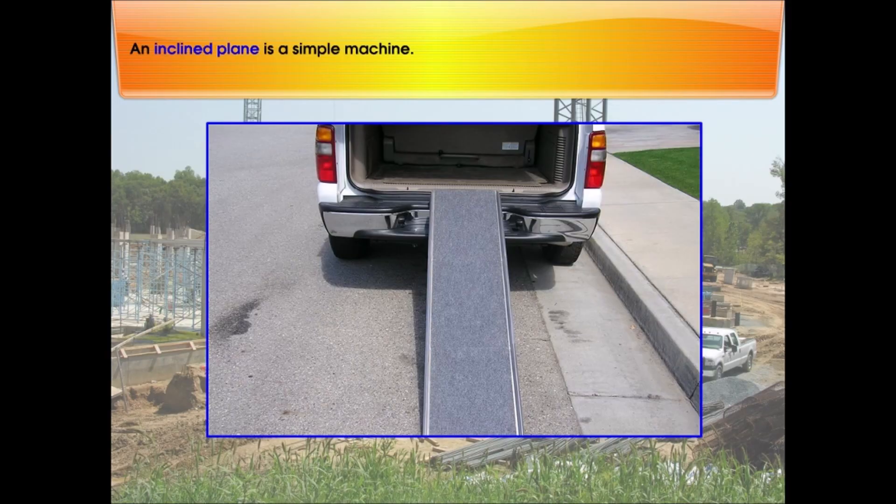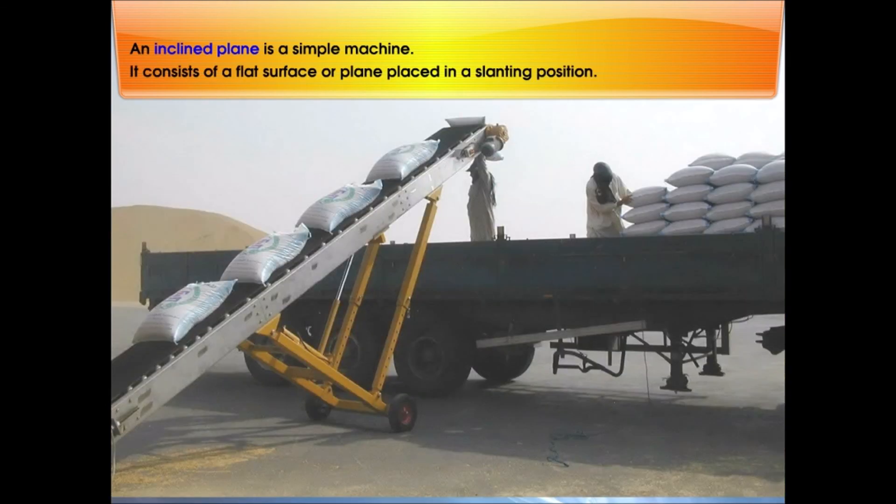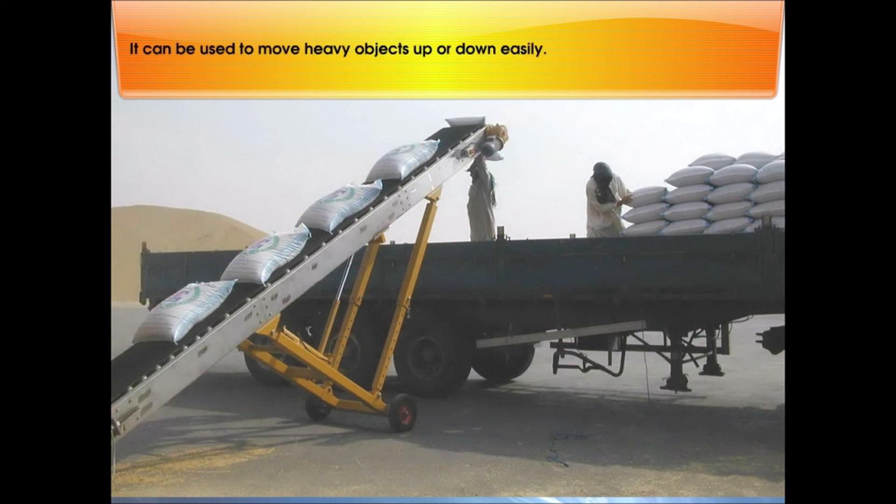An inclined plane is a simple machine. It consists of a flat surface or plane placed in a slanting position. It can be used to move heavy objects up or down easily. It is easier to push a heavy load up a gentle inclined plane than a steep inclined plane.